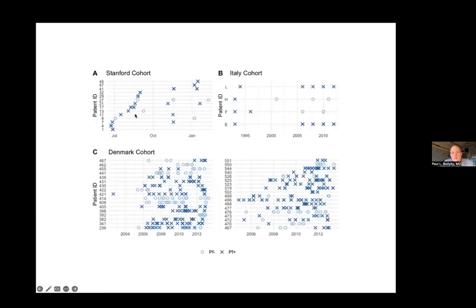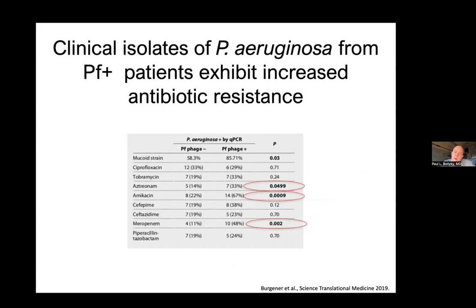Looking at pulmonary function in CF patients: 100% predicted is hopefully what you all have in the audience. If you take each dot as a person with CF and look at how much air they can breathe out in one minute scaled across age, patients infected with strains of Pseudomonas that make this phage — shown in blue — tend to decline more precipitously in pulmonary function than those infected with strains negative for this phage. We also found that the strains of Pseudomonas carrying this phage are more likely to be antibiotic resistant — the same bacteria associated with worse antibiotic sequestration in our assay are exactly the ones these patients are more likely to develop resistance to. This phage is actually driving antibiotic resistance in addition to disease in these folks.